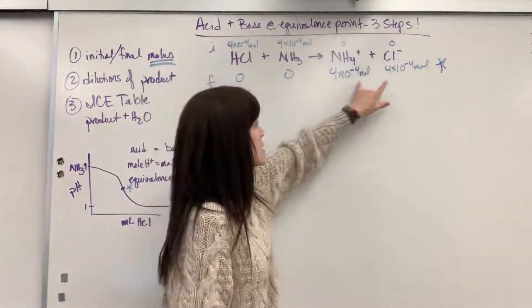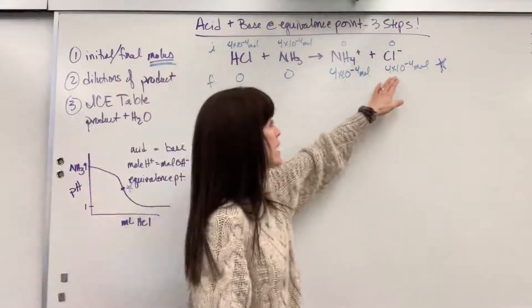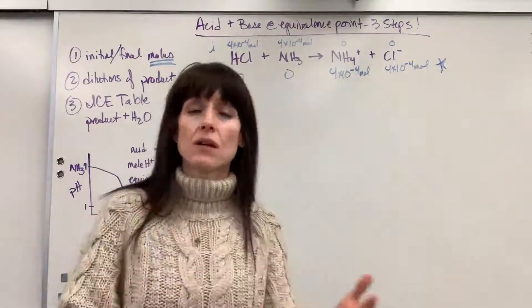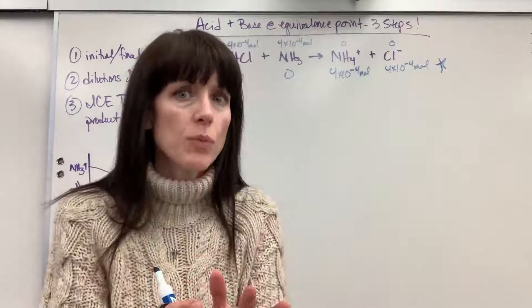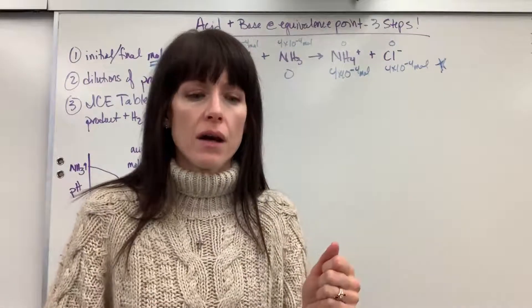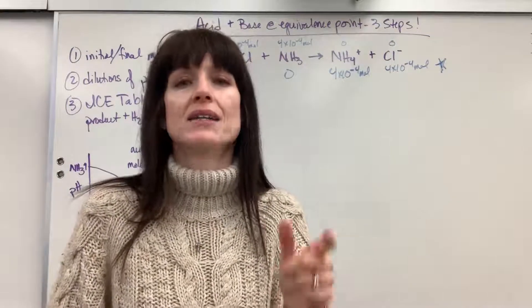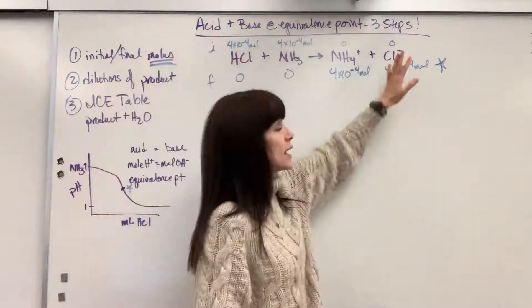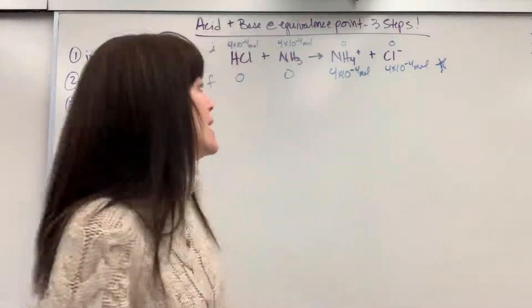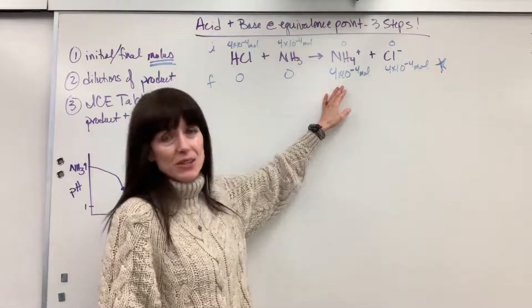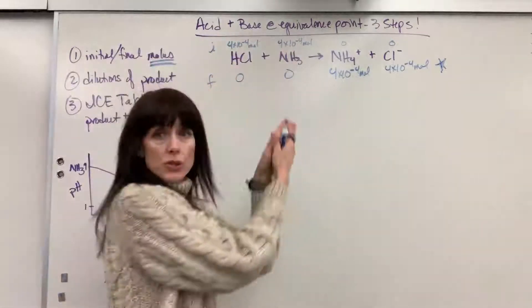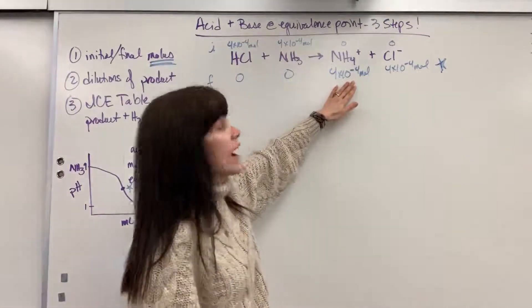I look at these ions. Chloride is a neutral ion — it will not impact the pH because it's associated with the strong acid, hydrochloric acid. If you need help with neutral ions, go to the acid-base equilibrium playlist and watch the video on aqueous solution of salts. That chloride is going to float in this 50 mL and do a big fat nothing. However, ammonium — that's not a neutral ion, it will impact the pH. So the pH will completely depend on that ammonium.